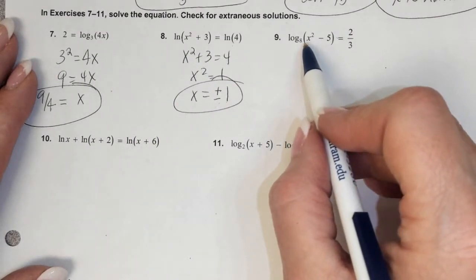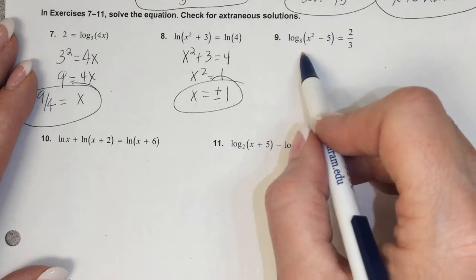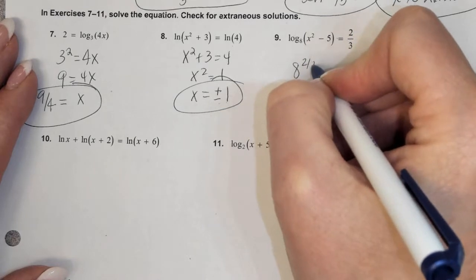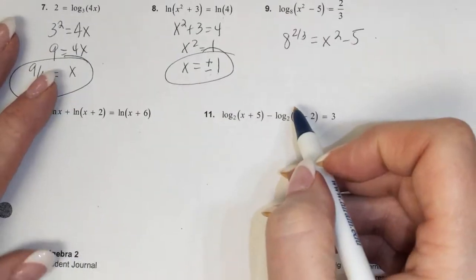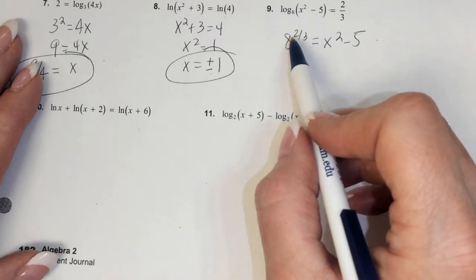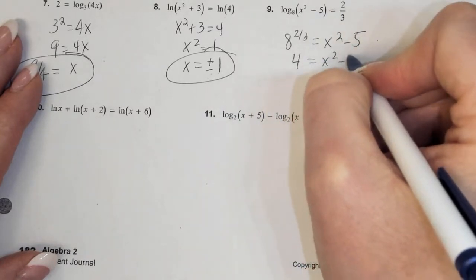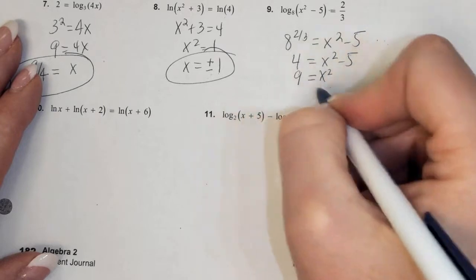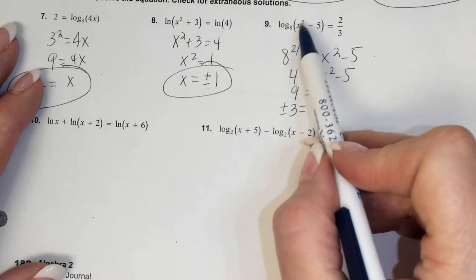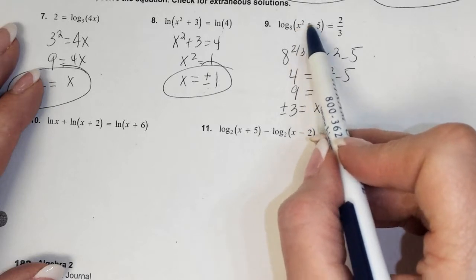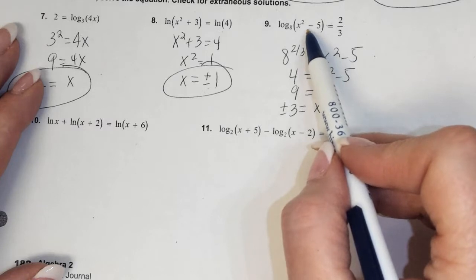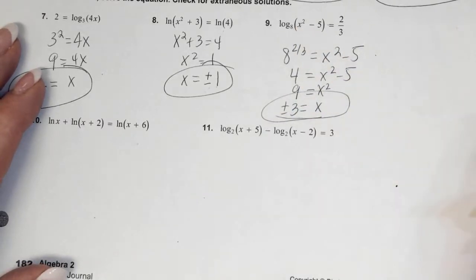We just have a log on one side, so Justin says: rewrite as 8 to the power of 2/3 equals x squared minus 5. We need 8 to the two-thirds: that's the cube root of 8 squared, which is 4. So 4 equals x squared minus 5, meaning x squared equals 9, and x equals plus or minus 3. Check: plugging in negative 3, negative 3 squared is 9, and 9 minus 5 is 4, which equals 8 to the two-thirds. So both values work — no extraneous solutions here.